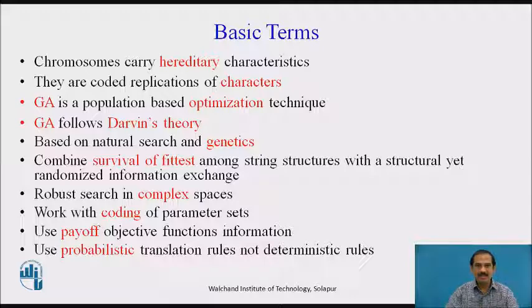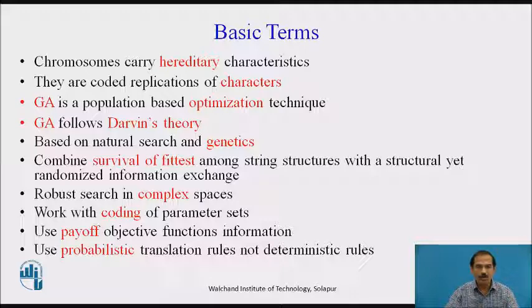Genetic algorithm is a part of evolutionary computation where every individual is called a chromosome. It has hereditary characteristics and coded replications of characters called genes, which are present on these chromosomes. Every chromosome is an array of characters and each character determines a gene. GA is population-based, where a population is a combination of many chromosomes, and it is an optimization technique.